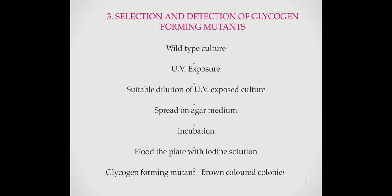The third example is selection and detection of glycogen-forming mutants. Wild-type culture is exposed to mutagen to increase the rate of mutation. The mutagen-exposed culture is then suitably diluted and spread on agar medium. The plates are incubated at suitable temperature for 24 hours. After incubation, glycogen-forming colonies can be detected by flooding the plate with iodine. Glycogen gives a brown color in the presence of iodine, so mutant colonies will appear brown in color. However, the problem is that iodine kills the cells, so the mutant culture is not available for further study. To get a live culture of the mutant, the replica plate technique is used. In this technique, a plate containing thousands of colonies is replicated. The replica plate is then flooded with iodine to detect mutant colonies. The culture of the mutant colony is obtained from the corresponding locations on the original plate.